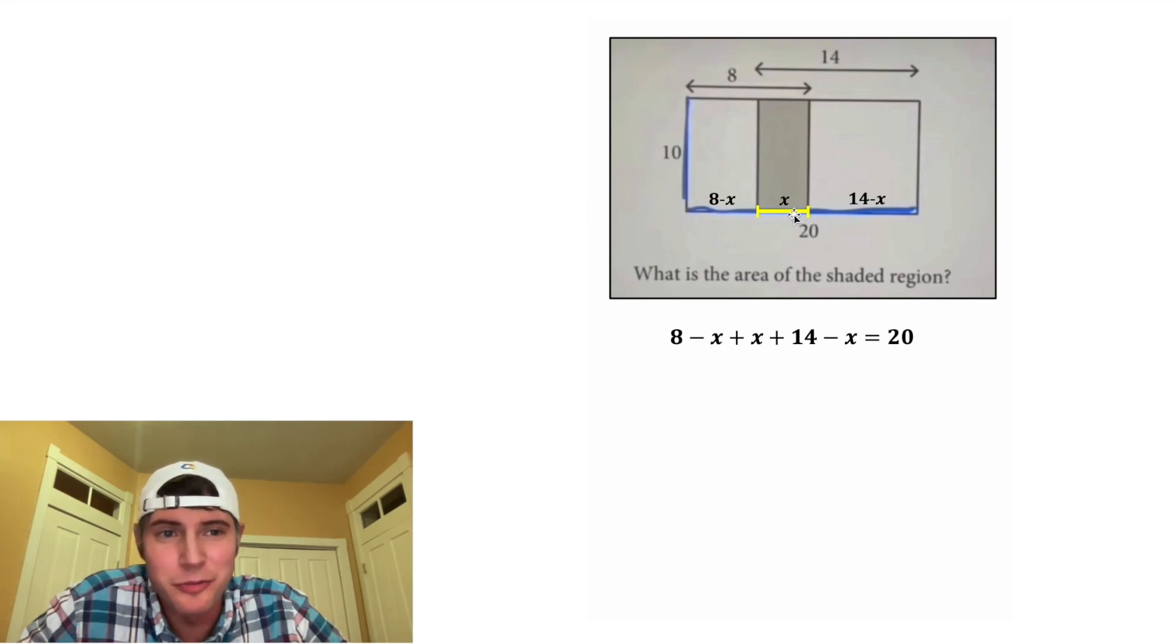And now we can solve for X. So first we'll combine like terms. This negative X and this positive X can cancel each other out. And we can bring down this negative X. We can combine the 8 plus the 14 to give us 22, and this is all going to be equal to 20.